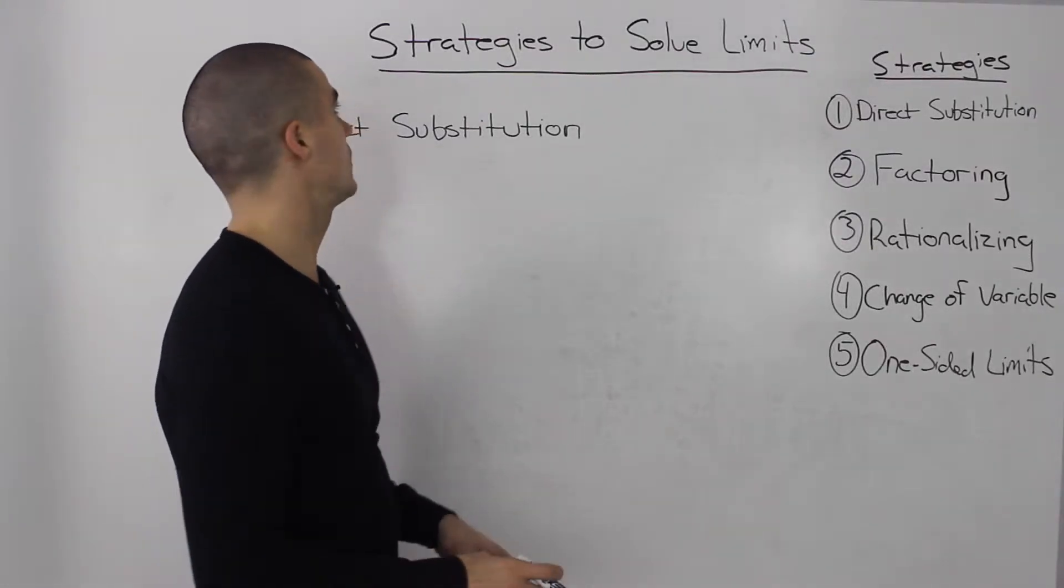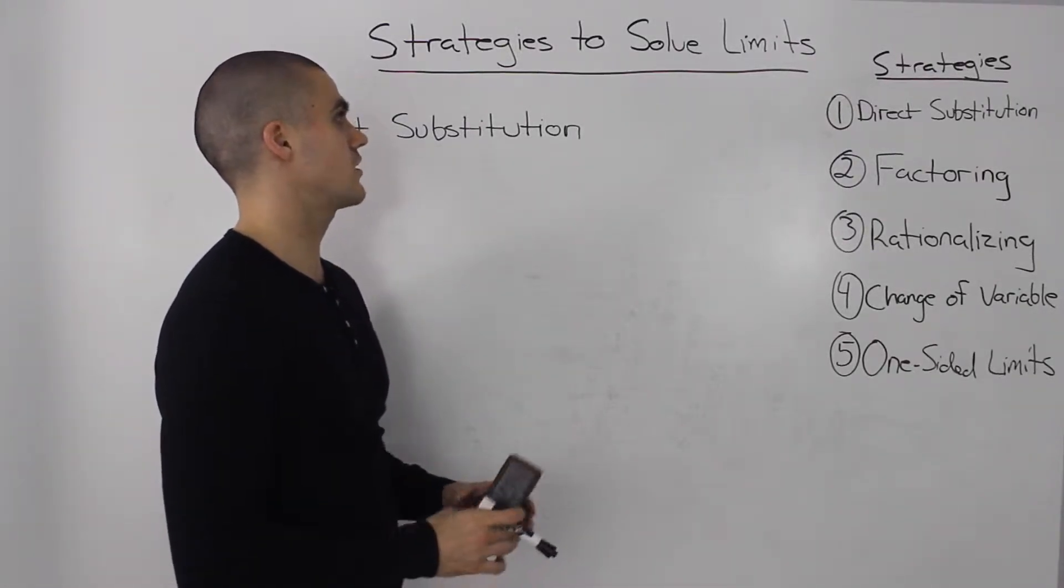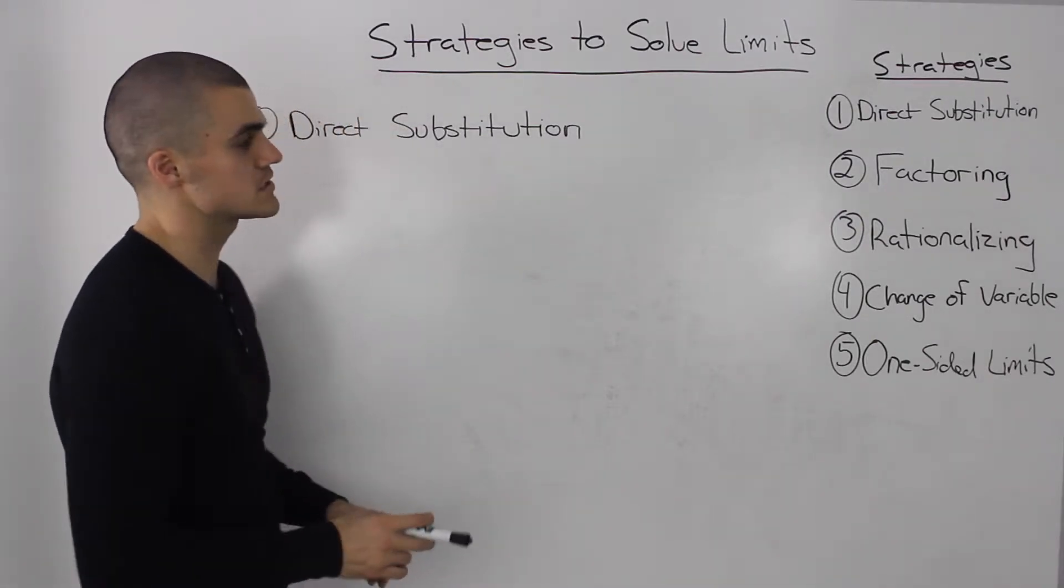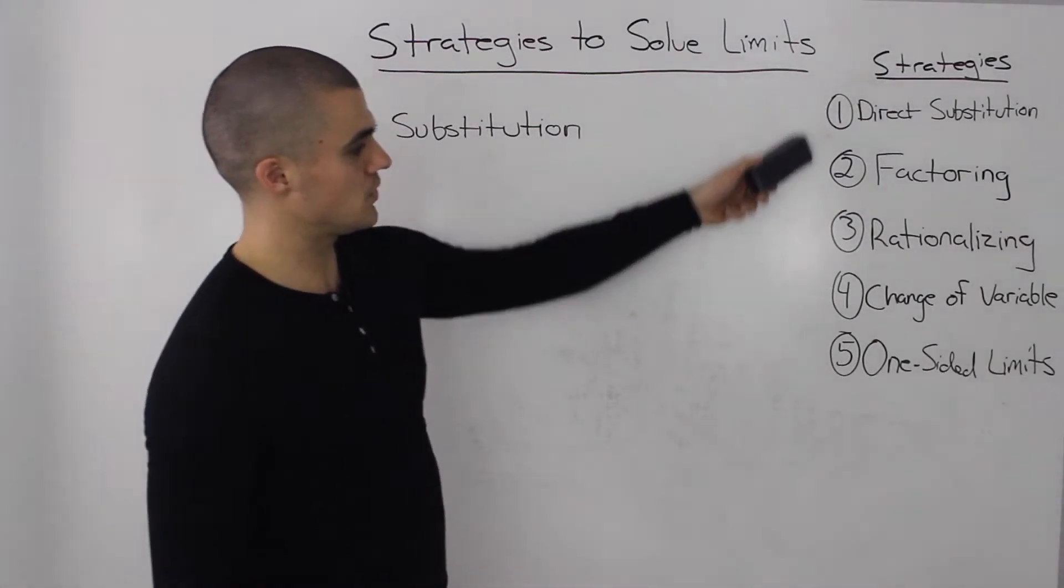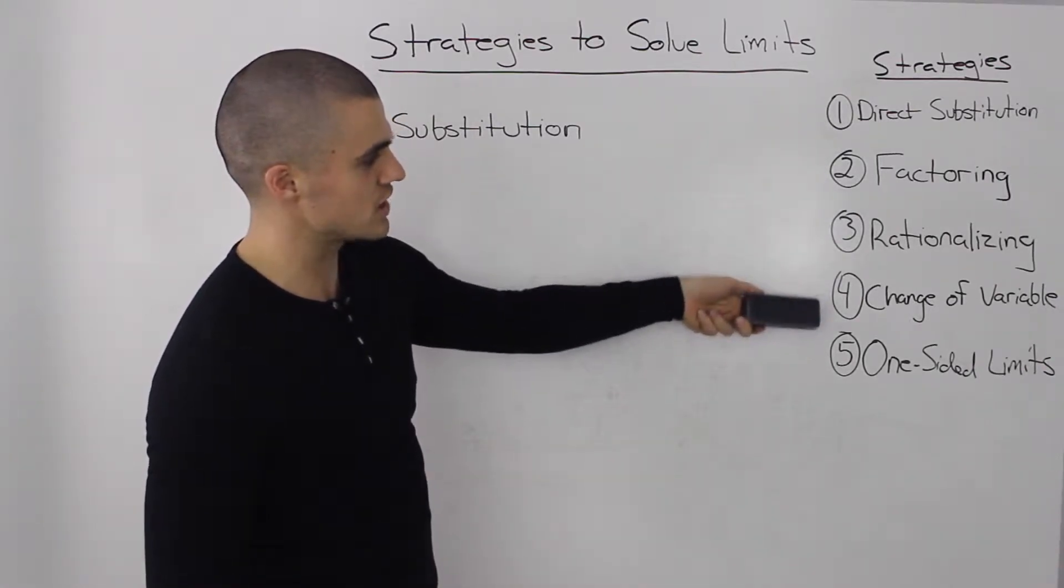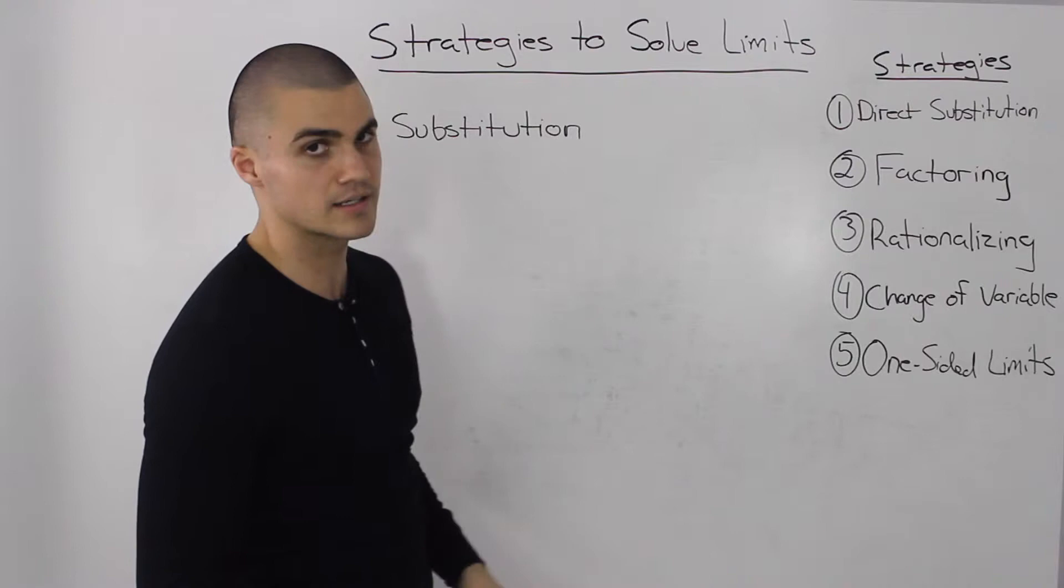Now we're going to be talking about strategies to solve limits. We're going to go over five different ones: direct substitution, factoring, rationalizing, change of variable, and one-sided limits.